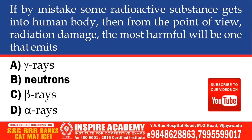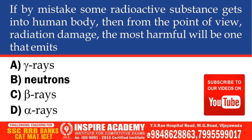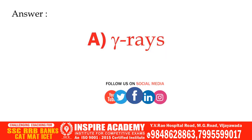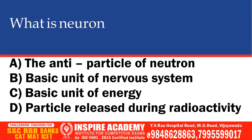If by mistake some radioactive substance gets into the human body, from the point of view of radiation damage the most harmful would be one that emits: gamma rays, neutrons, beta rays, or alpha rays. And the correct answer is gamma rays.